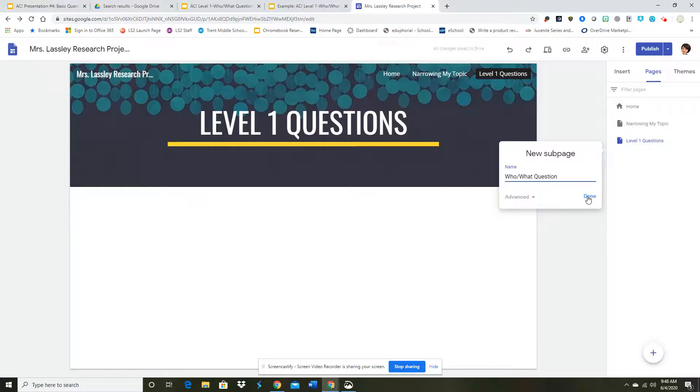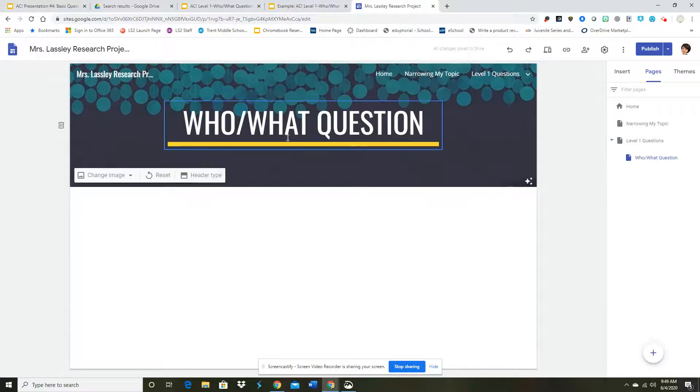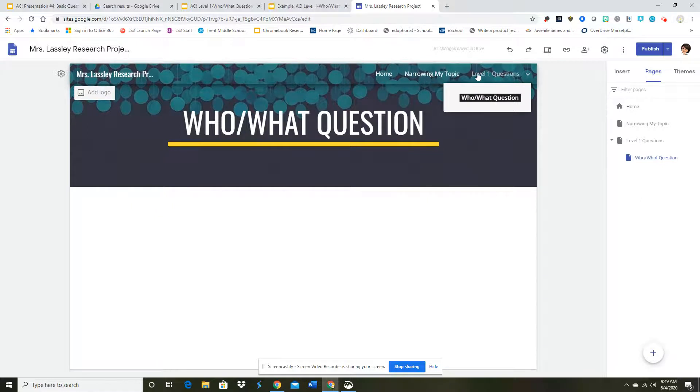So when I do that, I'm going to get a new one and you'll notice right there is my title. Now that I've done that you can see it over here that it's indented, so it's a second page. And you'll notice that here at the top it actually created an arrow.